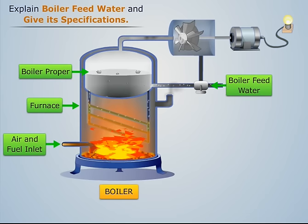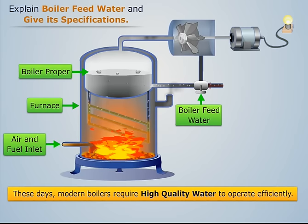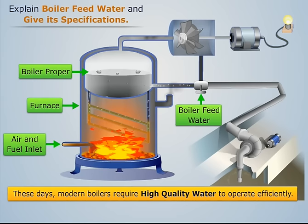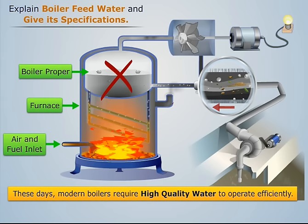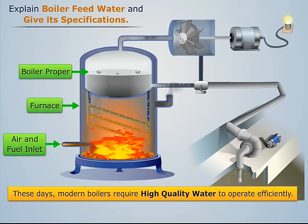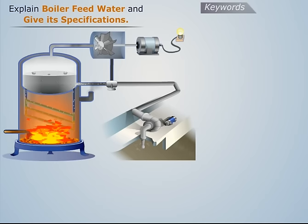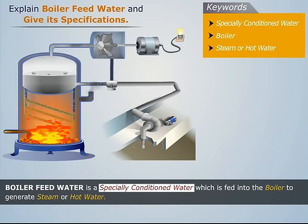In heating applications, the water which is fed into the boiler is called the boiler feed water. Modern boilers require high quality water to operate efficiently, but such water can never be obtained from any natural sources as it contains certain impurities. The presence of impurities in the water makes it unfit for use in boilers, so to make the water fit, it should be pre-treated using various techniques. Thus, boiler feed water is specially conditioned water which is fed into the boiler to generate steam or hot water.